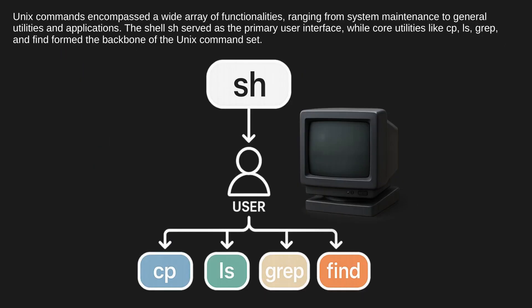Unix commands encompassed a wide array of functionalities ranging from system maintenance to general utilities and applications. The shell (sh) served as the primary user interface, while core utilities like cp, ls, grep, and find formed the backbone of the Unix command set.